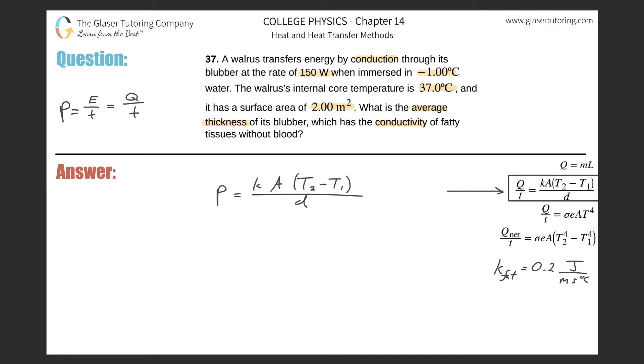So basically, we're after D. We just have to do a simple cross multiplication. Bring the D out of the denominator up into the numerator, bring the P out of the numerator and down into the denominator. And lo and behold, here is the formula.